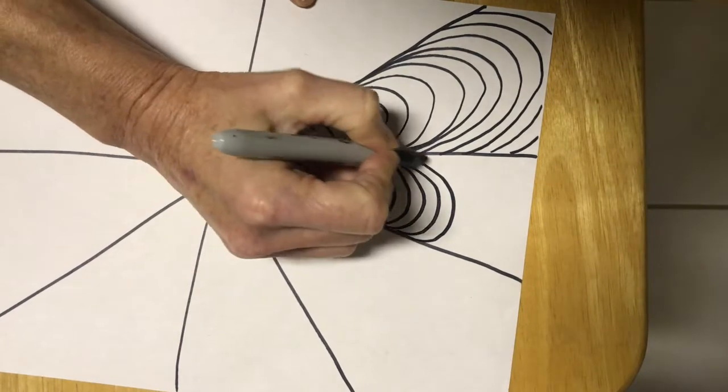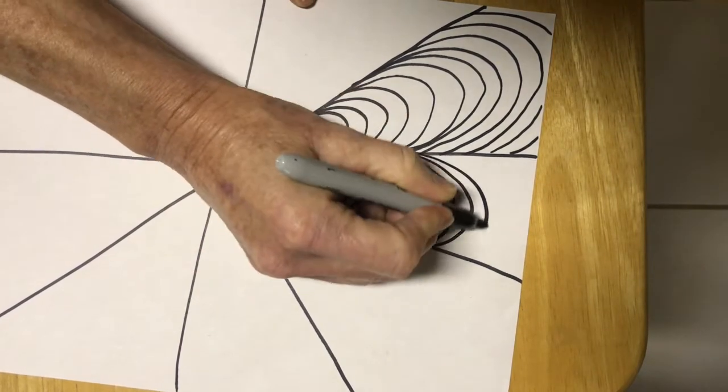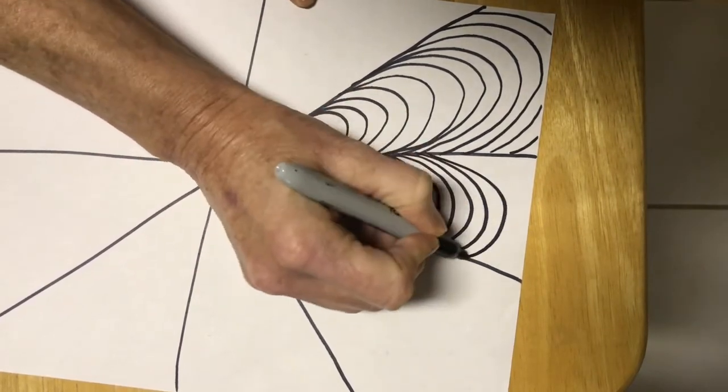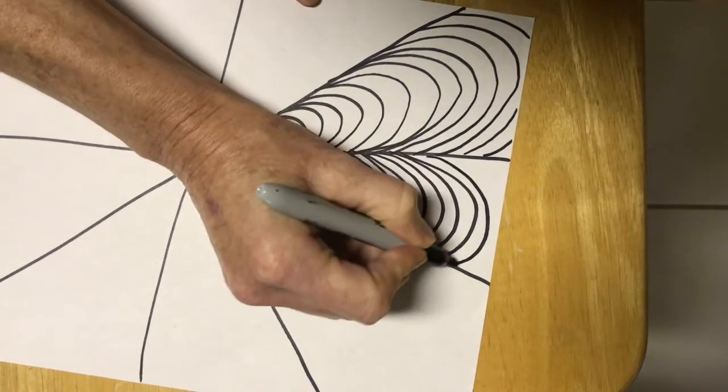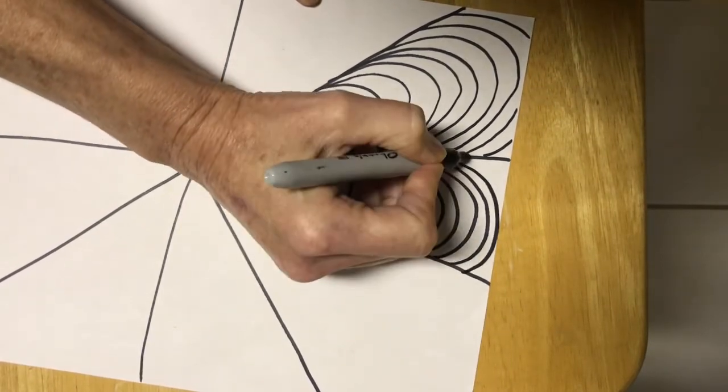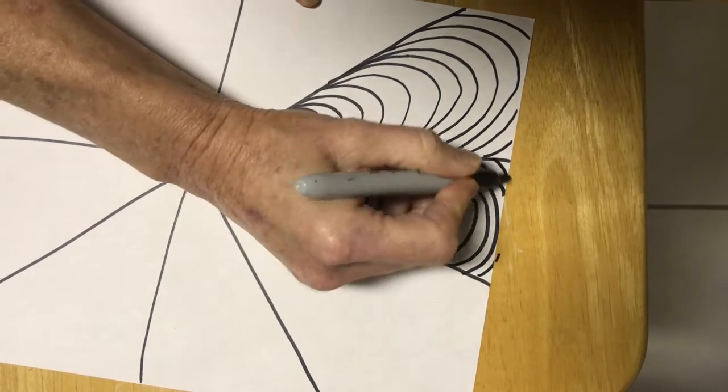Notice how this illusion is already starting. By using these curved lines it looks like these shapes are turning into three-dimensional forms like cones, like little ice cream cones on their side.